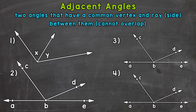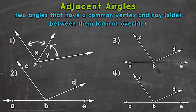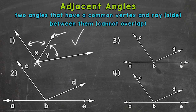Let's jump into number one, where we have angle x and angle y and determine if they are adjacent angles. Angle x is right here, and angle y is right here. Now they do share a vertex — the vertex is where two sides or rays meet to create an angle, you can think of it like the corner. They also share this side or ray, so they meet the standards for adjacent angles. They have a common vertex and a common ray or side, so angles x and y are adjacent.